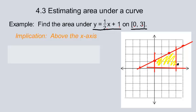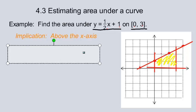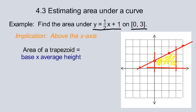We have our resulting region right in here, and it just so happens this region is a geometric shape — it's called a trapezoid. We have a formula for finding the area of a trapezoid, so we don't even need to make an estimate for this. We can just figure out the exact answer.